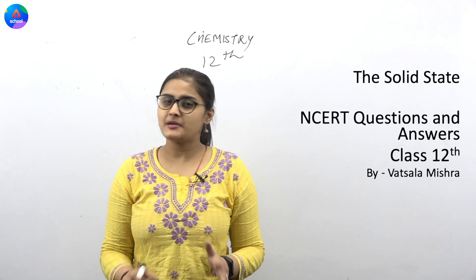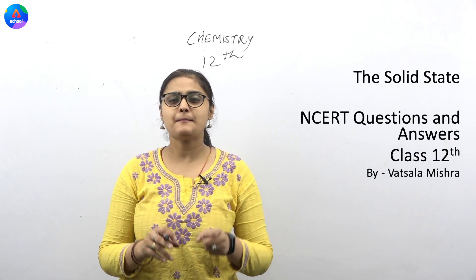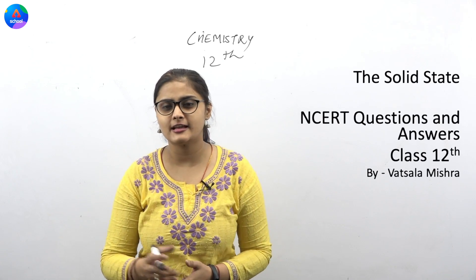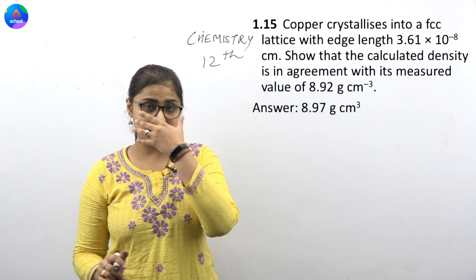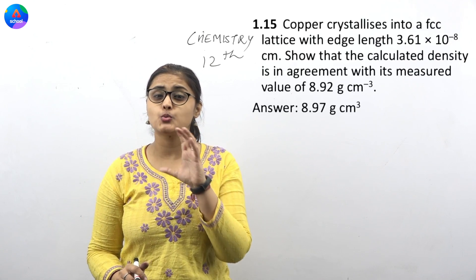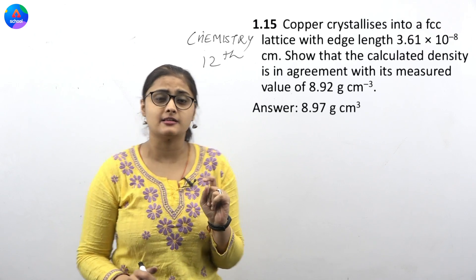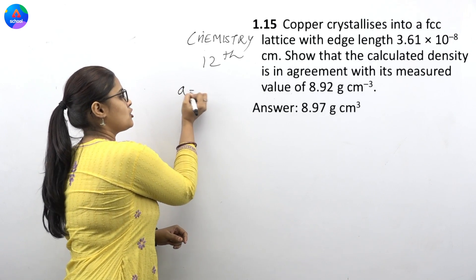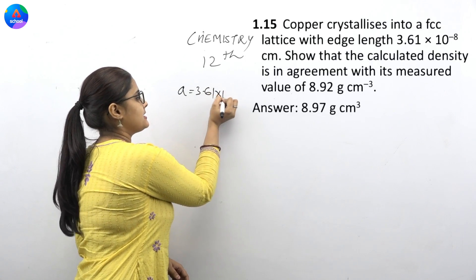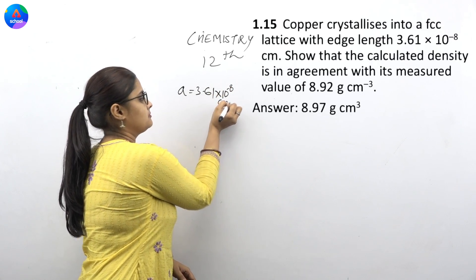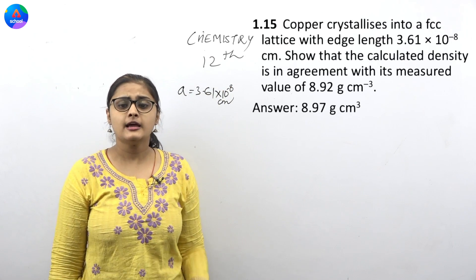So what are we going to discuss about NCERT's back exercises? Let's see today's question. Today's question is: copper crystallizes into FCC lattice with edge length. Edge length will be given. So, let's solve 3.61 into 10 to the power minus 8. That's it.